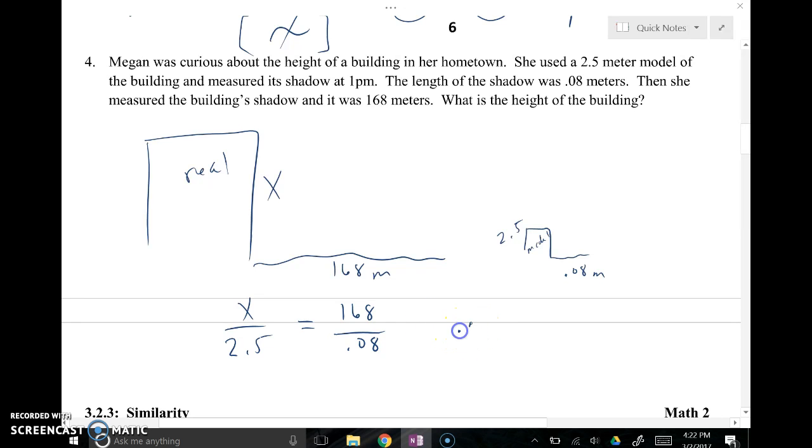So cross multiply, I get 0.08 times X is equal to 2.5 times 168. 0.08x is equal to 420. Now to get X by itself, I'm going to divide both sides by 0.08 meters, and X will be equal to 5,250 meters. It's a really tall building.